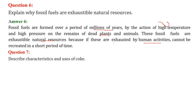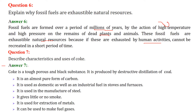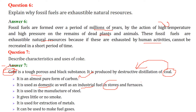Describe characteristics and uses of coke. Coke is a very tough, porous black substance produced by the destructive distillation of coal. It is an almost pure form of carbon. It is used for domestic and industrial fuel in stoves and furnaces, in the manufacture of steel, for the extraction of metals, and it produces practically no smoke.